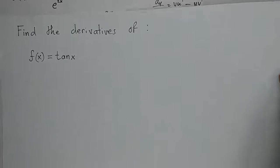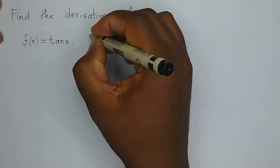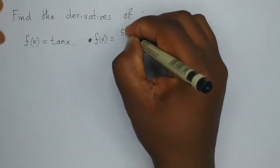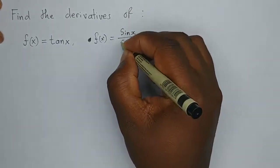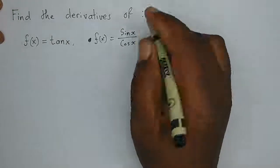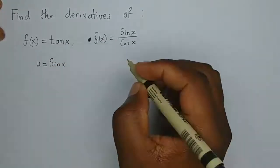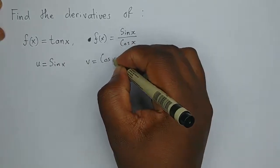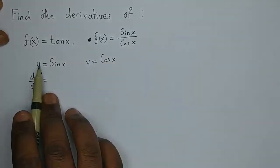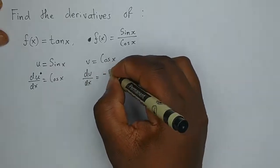We've been asked to find the derivative of tan. Before we do that, we should know that the tan function is the same as sine over cosine. So we can use that form and apply the quotient rule, where our numerator u is sine x and our denominator v is cos x. Differentiating u gives us a positive cos x, and differentiating v gives us a negative sine x.